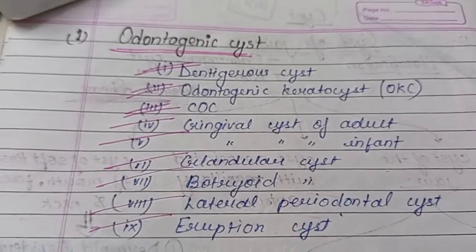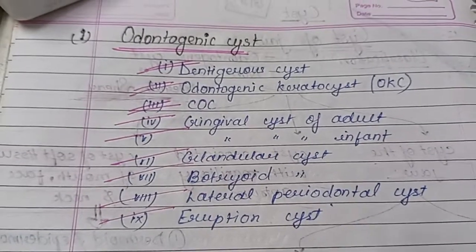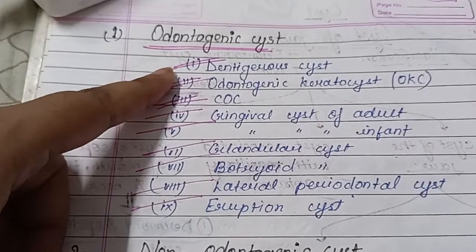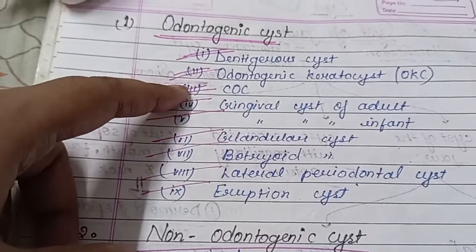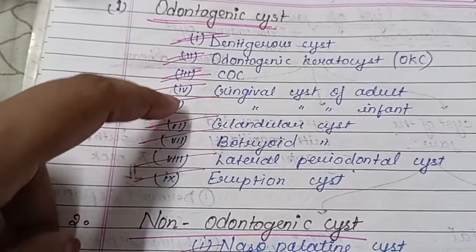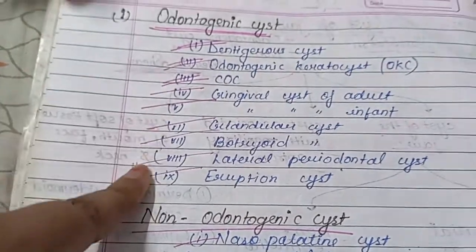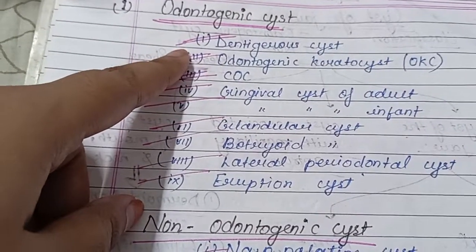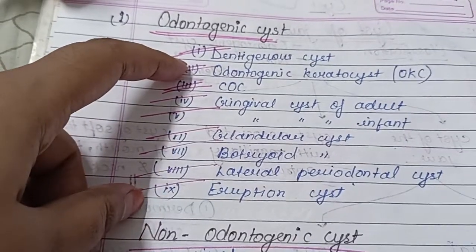Odontogenic cysts are mainly divided into nine types — these are very important for exams: dentigerous cyst, odontogenic keratocyst (OKC), calcifying odontogenic cyst (COC), gingival cyst of the adult, gingival cyst of the infant, glandular cyst, botryoid cyst, lateral periodontal cyst, and eruption cyst. Of these, dentigerous cyst and OKC (odontogenic keratocyst) are the most important for professional exams.